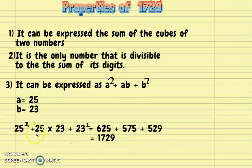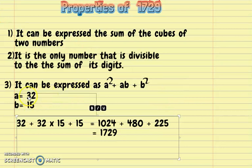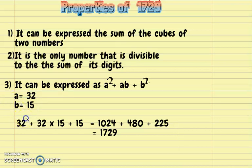This can be expressed in four different ways. The second way: if a = 32 and b = 15, using the formula we get 32² + 32×15 + 15², which equals 1024 + 480 + 225, giving us 1729.